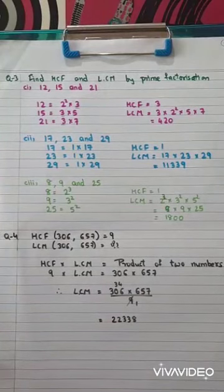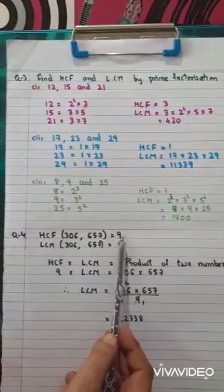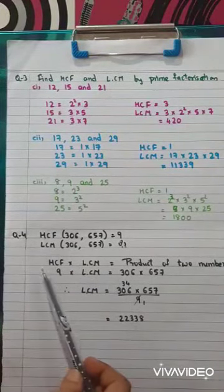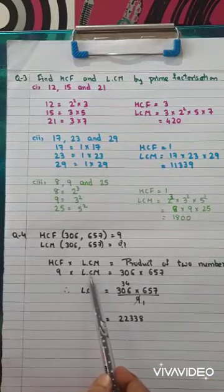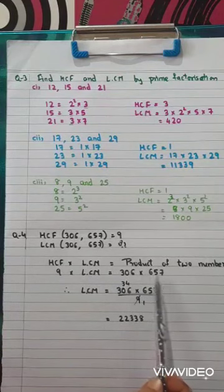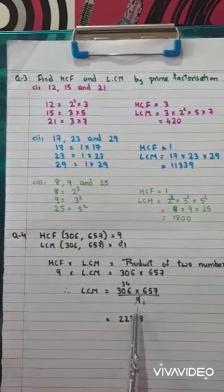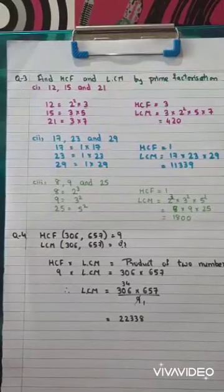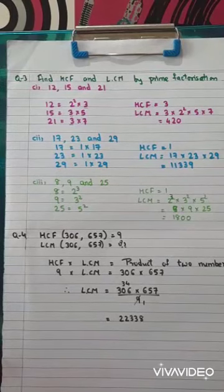Question number 4: HCF of 306 and 657 is given as 9. Find the LCM. Using the formula HCF into LCM equals product of two numbers: 9 multiplied by LCM equals 306 multiplied by 657. So LCM equals 306 multiplied by 657 divided by 9, which gives 22,338. Children, for today this much only. Thank you very much and please copy down all these things in your notebook.